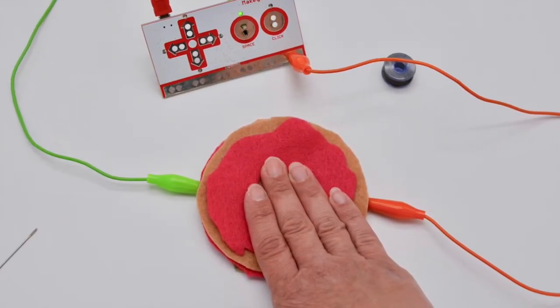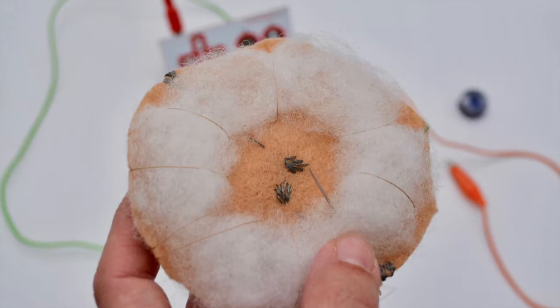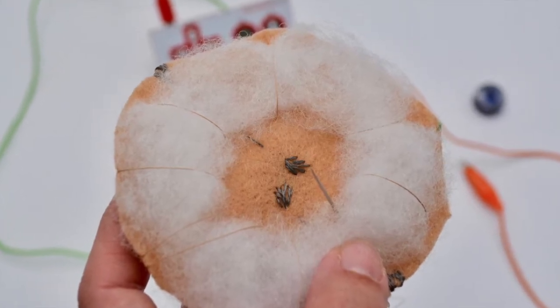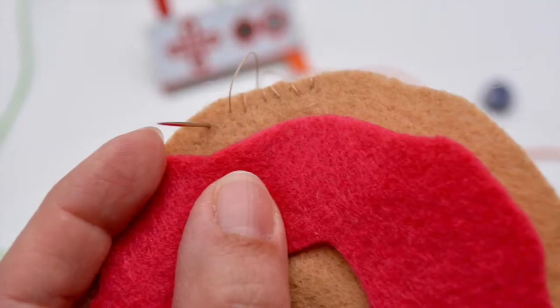You're going to test it to make sure that the stuffing doesn't get in the way, and you might even want to sew some thread to hold that stuffing out of the way of those two conductive pads.